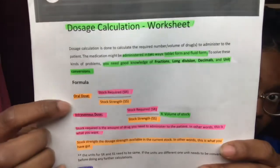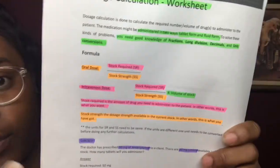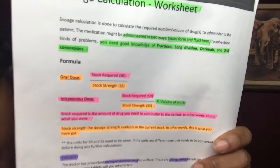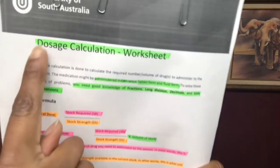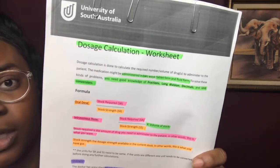The dosage calculation formula is what you'll be using for your certification test for the medical assistant exam. You're going to have two different formulas: one for the oral medication and one for the IV medication. This is basically going to be the name of the formula — most people may know it as the desired over hand formula.